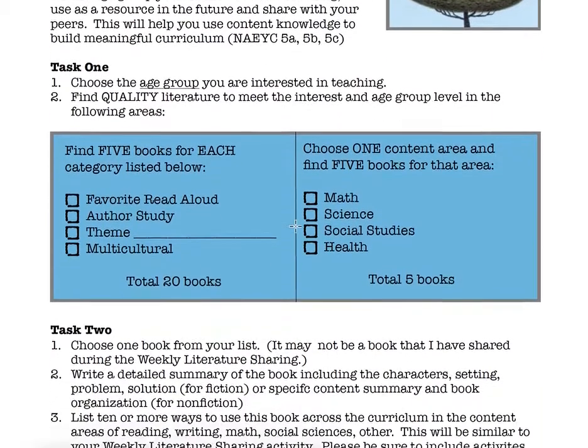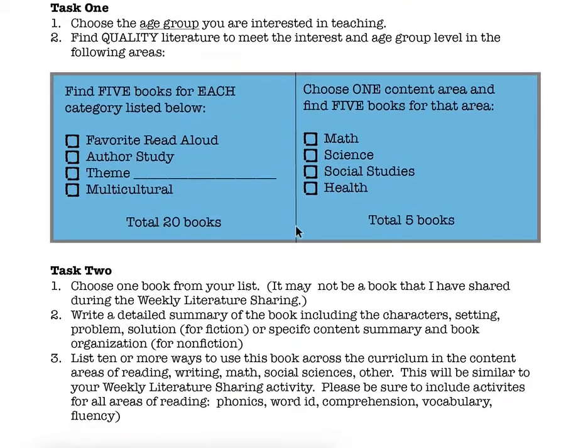We start off with Task 1. The first task of this project is to choose the age group that you are interested in teaching. You might pick preschoolers, pre-K, kindergarten, first grade, second grade, all the way up through fourth grade. This is very important because the age of learner you select will be reflected through the types of literature you choose.